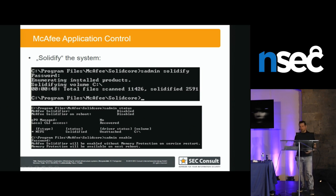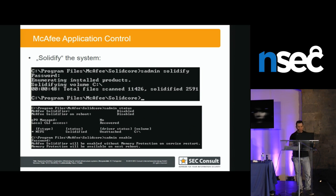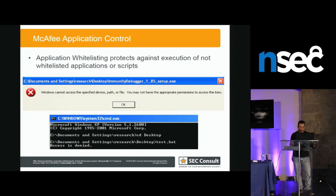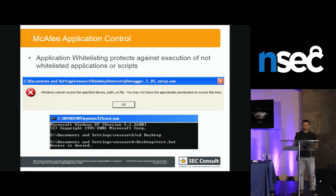After that, you say 'sadmin enable', then reboot the system, and the protection is enabled. For example, if I download a debugger and try to start it, it just says access is denied. The same is true if I create a script file — in this case test.bat — it just says access is denied; you cannot execute that kind of stuff.